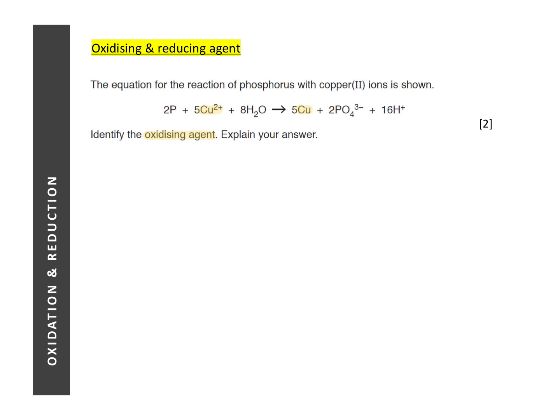If you are unsure which substance is undergoing oxidation or reduction, a tip is to look for free elements. When you spot a free element — for example, copper — it means copper is involved in either oxidation or reduction. You then look for the corresponding substance containing copper. In this case, copper(II) ions have been reduced to copper, so copper(II) ions are the oxidizing agent.